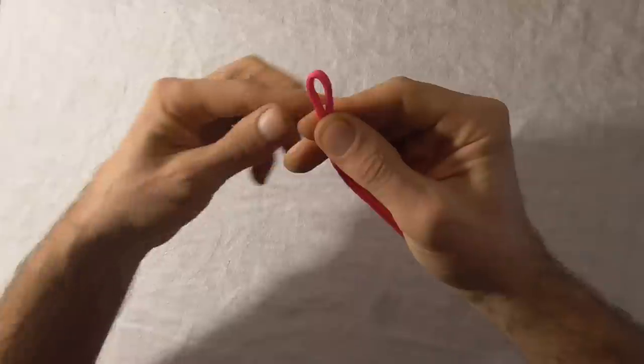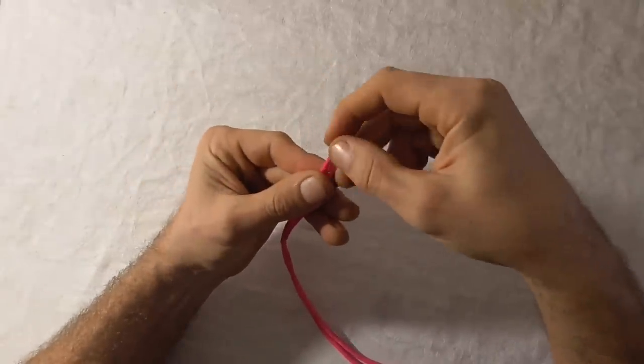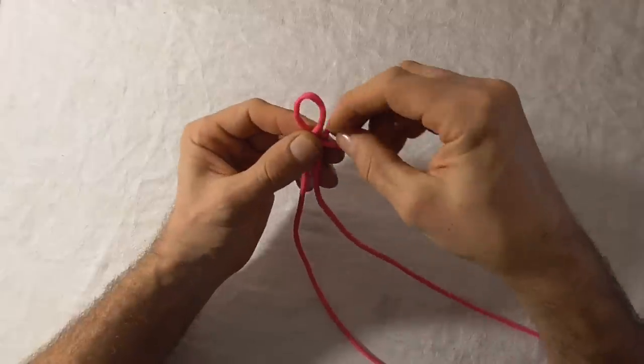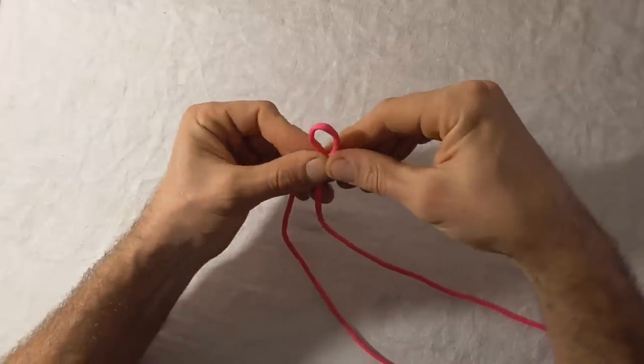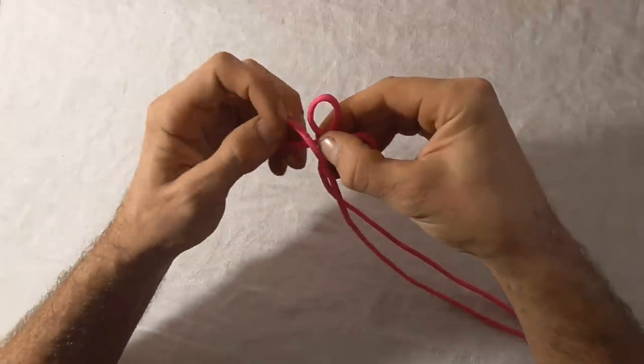I just want to make a counterclockwise loop here and then I'll make another counterclockwise loop on the right hand side and I want to make another counterclockwise loop on the right hand side.